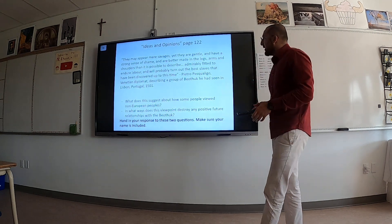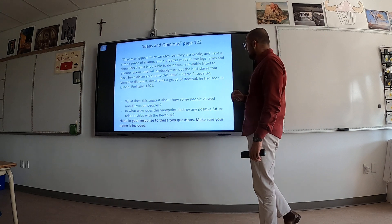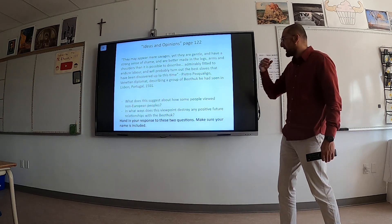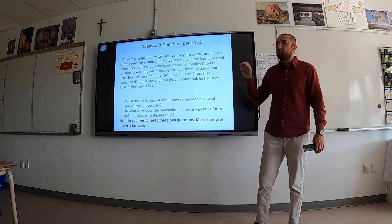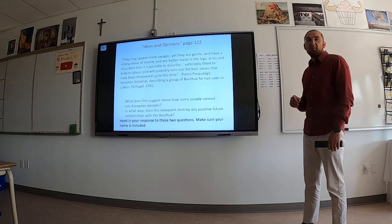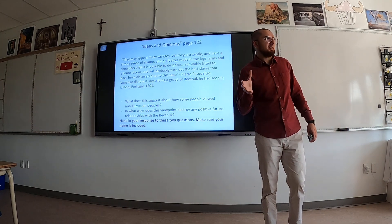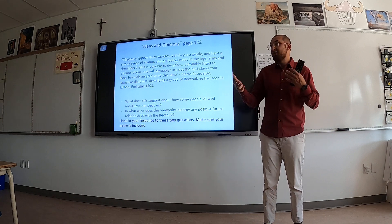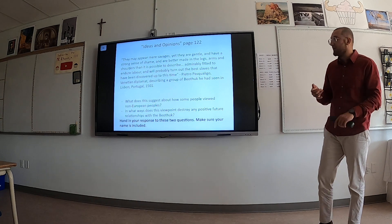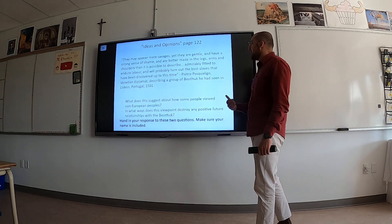There is a quote in your textbook — I believe it's on page 122. This is by Pietro Pasqualigo, a Venetian diplomat, so likely Italian. He's talking about a group of people he saw in Portugal. He says: 'They may appear mere savages, yet they are gentle and have a strong sense of shame, and are better made in the legs, arms, and shoulders than it is possible to describe.' Why do you think he might have called them savages? It could be because they looked and dressed very differently. He also notes they are gentle and understand shame.